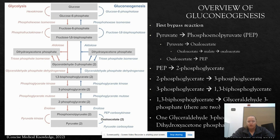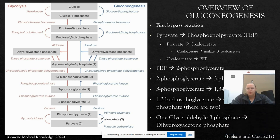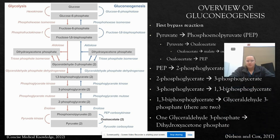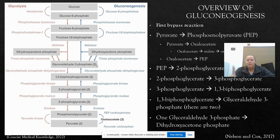3-phosphoglycerate is then phosphorylated by ATP, with the help of phosphoglycerate kinase, to create 1,3-bisphosphoglycerate — we've added that phosphate group. Afterwards, 1,3-bisphosphoglycerate forms glyceraldehyde-3-phosphate with the help of NADH and glyceraldehyde phosphate dehydrogenase. We now have two molecules of G3P. However, remember in glycolysis we broke into two different molecules — G3P and DHAP — so we've got to backtrack to do that again.